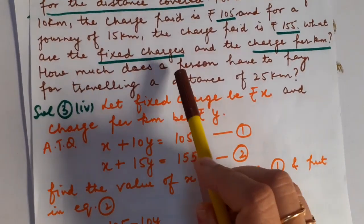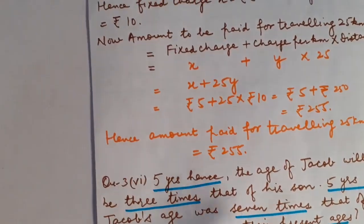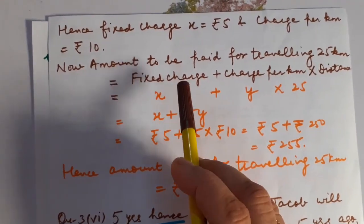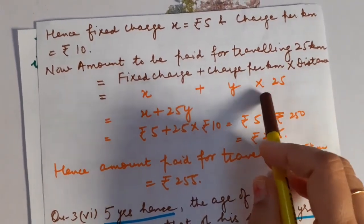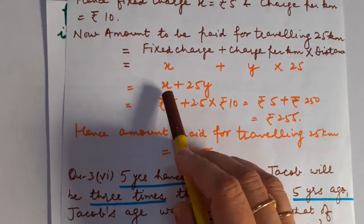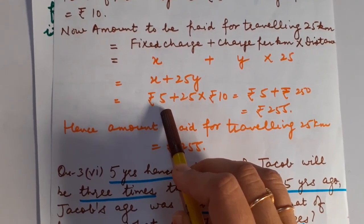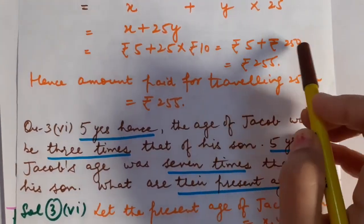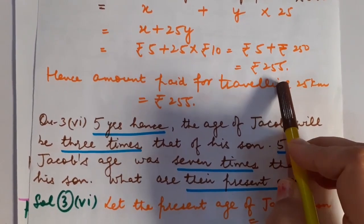What else is to be calculated? How much does a person have to pay for traveling a distance of 25 km? Amount to be paid = fixed charge plus charge per km multiplied by distance = X plus 25Y. Putting the values: Rs. 5 plus 25 into 10, that is 5 plus 250 = Rs. 255. The total which the person has to pay is Rs. 255 for covering the distance of 25 km.